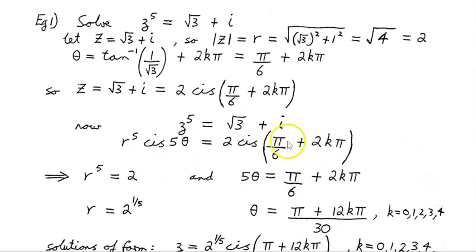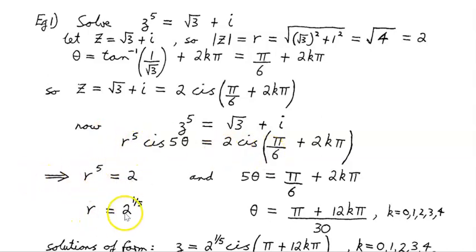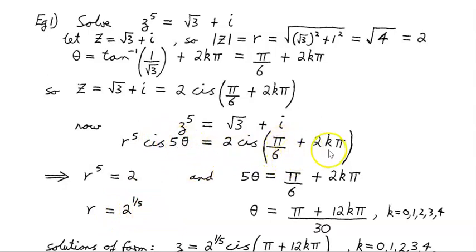Let's start equating things. Looking at the modulus: r to the power of 5 equals 2, so r equals 2 to the power of 1/5 — that's the fifth root of 2. That part's solved. For the argument: 5θ must equal π/6 + 2kπ.